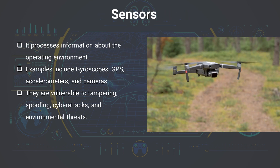Drone sensors process information about the operating environment to maintain the drone's stability and well-being. The flight controller uses this information to decide how to operate the drone. Examples of sensors include gyroscopes that measure angular orientation and velocity, accelerometers that measure direction during acceleration, GPS to determine position and altitude, and cameras that capture images and videos.